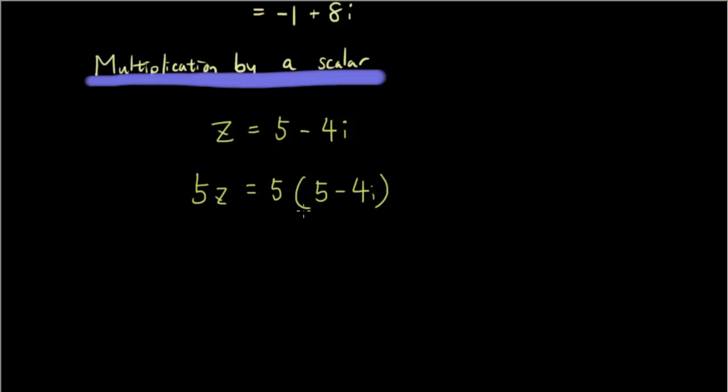And so using this example we can develop a general formula. So if z is equal to x plus yi - I chose x and y because 5 is the number on the x-axis, on the real axis, and negative 4 is the number on the imaginary axis.